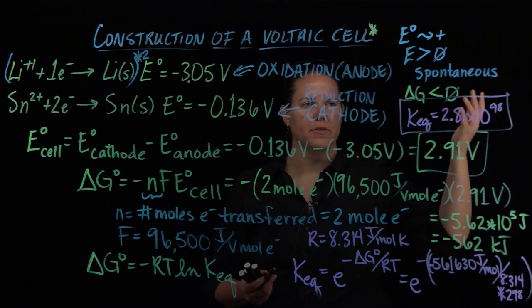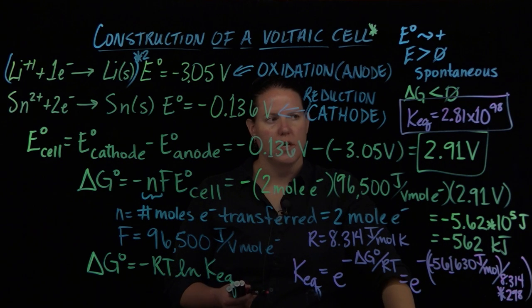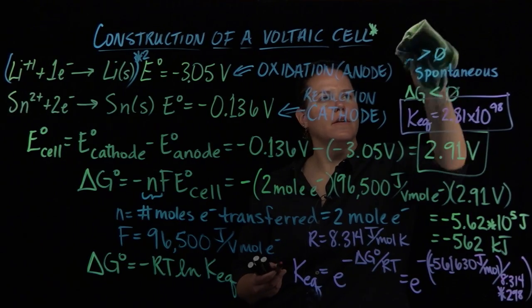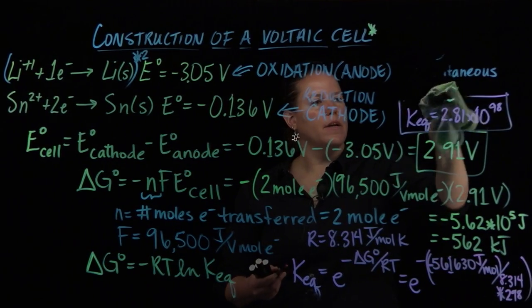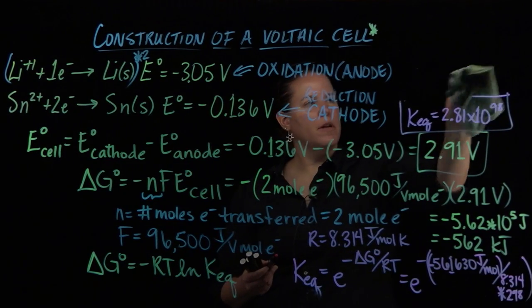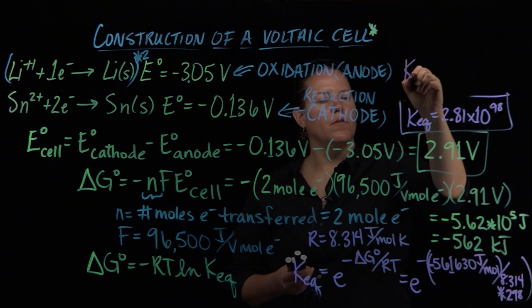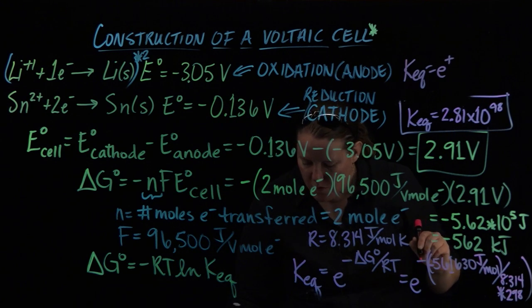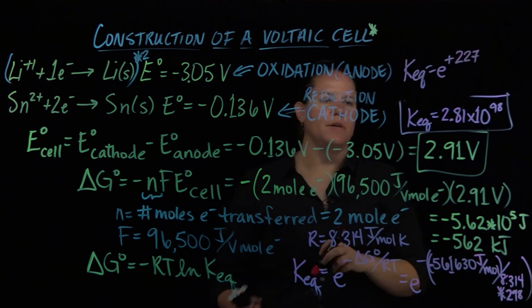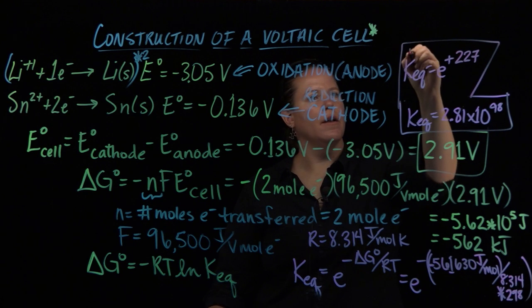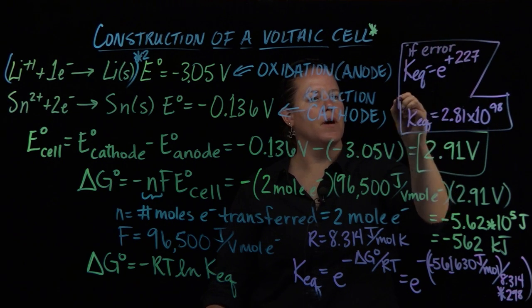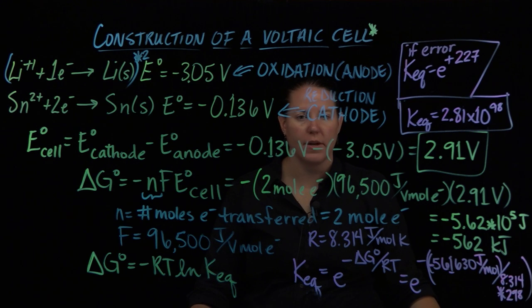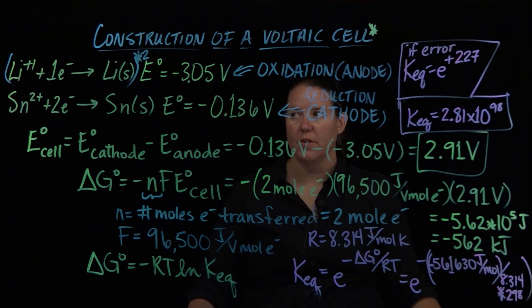Sometimes when you get times 10 to the 98th or something that's really big like this, sometimes your calculator is going to give you an error. So the way you would write this, if you got an error on your calculator, what I would expect you to do on a test is I would expect you to have a backup plan. Your backup plan would be putting simply KEQ equals E to the positive of the original number, which was 226 or 227, and I would take that as well if you had an error on your calculator. Otherwise I would expect the bottom number. And that finishes up the calculations for the battery. Next time we'll do the actual construction of the cell for this exact reaction.